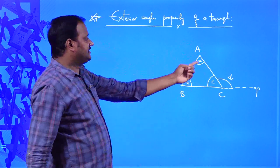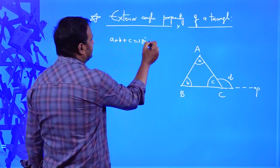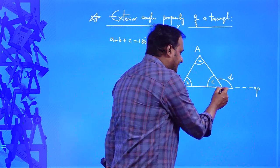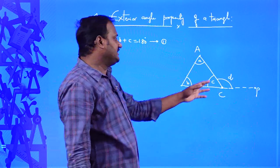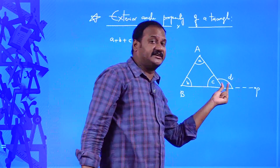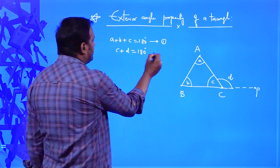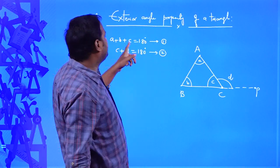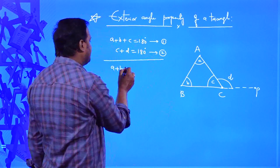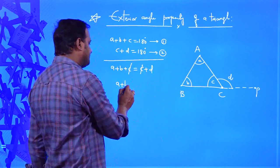Now I want to find the relationship between d and the other angles of the triangle. We know the sum of all three interior angles of a triangle is equal to 180 degrees. So A plus B plus C is equal to 180 degrees — that is the first information. Now see here, B, C, P is a straight line. Since BCP is a straight line, at C there are two angles formed. We can call C and D a linear pair of angles, so C plus D is equal to 180 degrees. From these two equations, A plus B plus C equals C plus D, so C and C cancel, giving A plus B equals D.